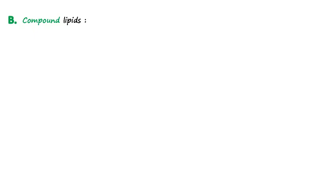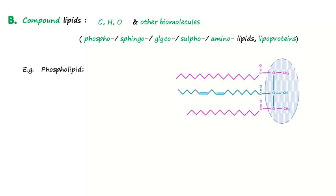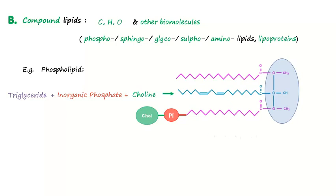Compound lipids are the second type of lipids. They contain carbon, hydrogen, oxygen, and other functional groups forming phospholipids, sphingolipids, glycolipids, sulfolipids, amino lipids, and lipoproteins. Let's illustrate a phospholipid. This compound lipid is formed from a reaction between a triglyceride, an inorganic phosphate, and a specific biomolecule. In this case, it is choline. This phospholipid is named phosphatidylcholine.